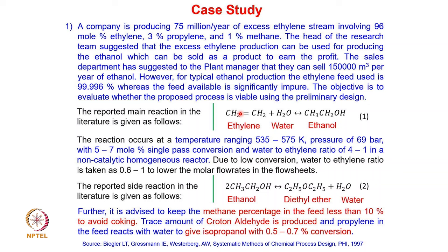The main reaction is ethylene reacting with water to produce ethanol. This reaction typically occurs at a temperature of 535 to 575 Kelvin and at a pressure of around 69 bar. The single-pass conversion is around 5 to 7 mole percent, and the water-to-ethylene ratio maintained is around 4 to 1. Since conversion is low, large amounts of ethylene remain unreacted, so a water-to-ethylene ratio of 0.6 to 1 is used to maintain lower molar flow rates in the flow sheet.